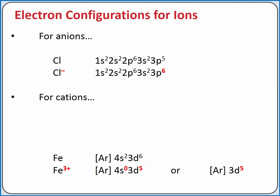As a result, the electron configuration for iron 3 plus is argon 3d5, not argon 4s2 3d3.